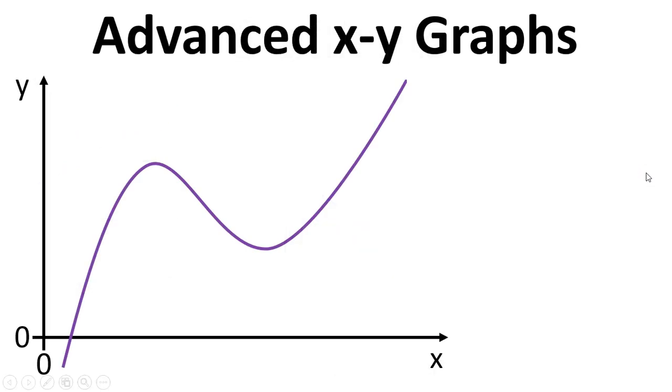So what happens though if we've got a more complicated graph where we've got a curve, things are changing versus x, it's not just a straight line anymore, what's the gradient?